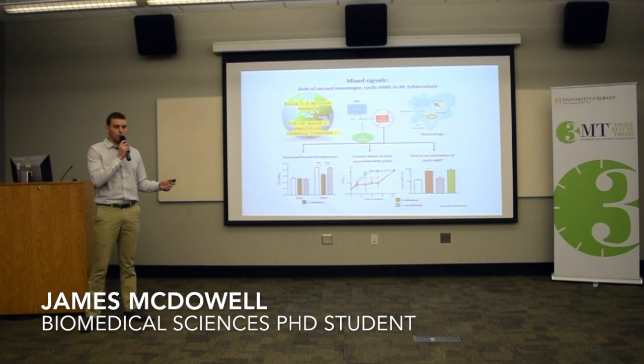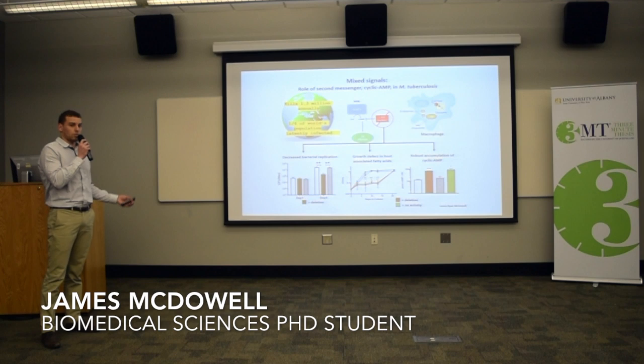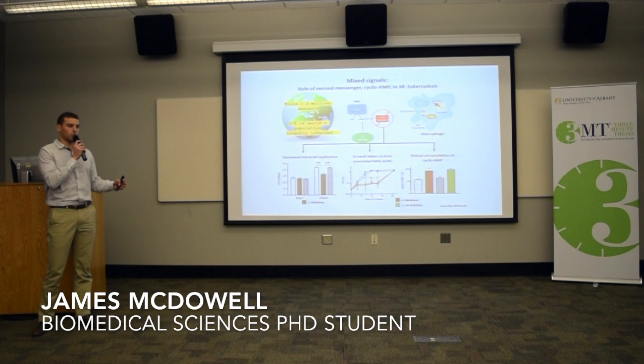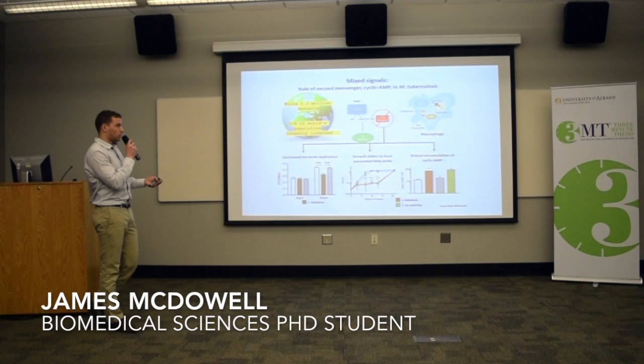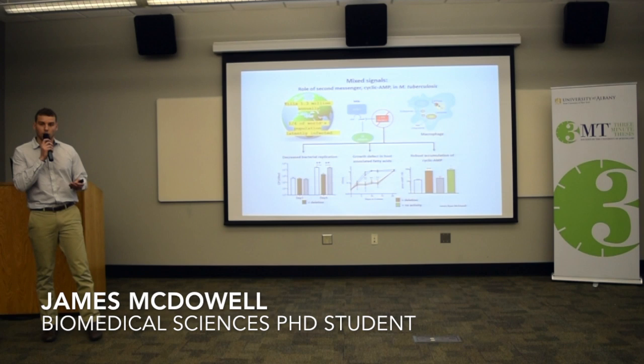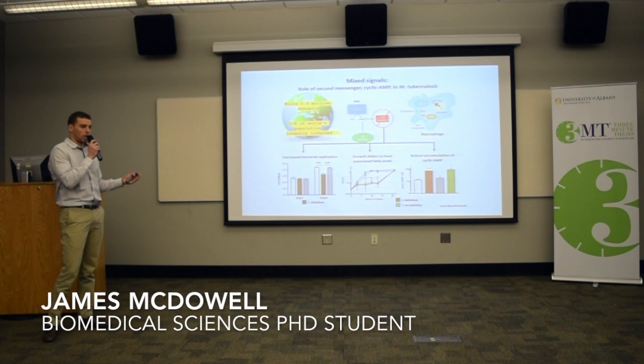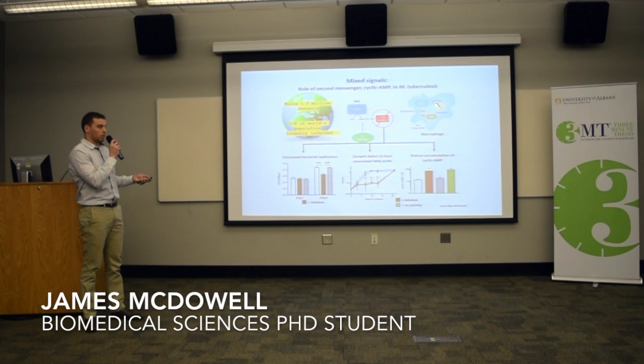TB is very good at adapting and responding to its host environment, and it does this through signal transduction. Think of signal transduction as a chain reaction, where an environmental signal can activate an enzyme that produces cyclic AMP. Cyclic AMP is a universal chemical messenger that can bind to and activate — either turn on or turn off — certain proteins. These proteins can cause changes in MTB's physiology, which will result in the ability of the bacteria to adapt to the signal.